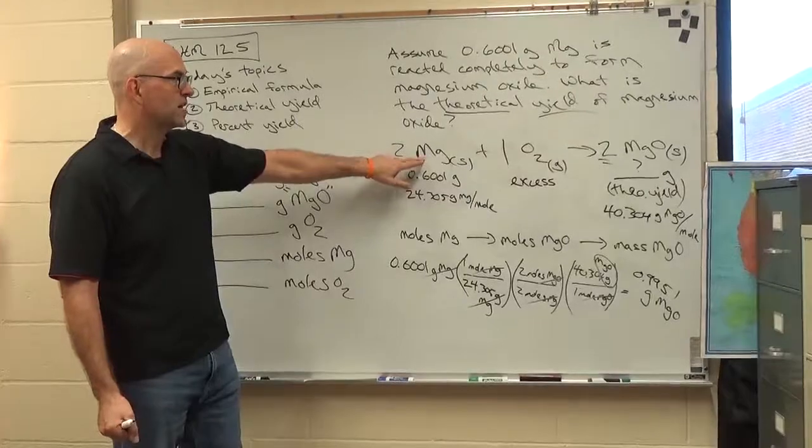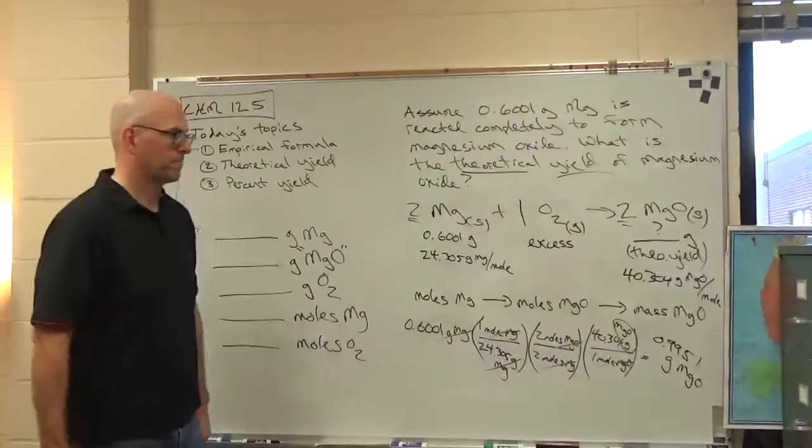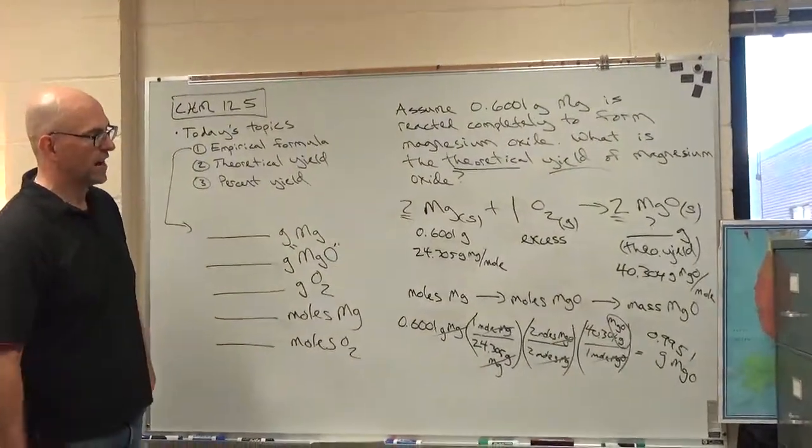You're taking an atom of oxygen, combining it with magnesium. So the molecule's getting bigger, so it makes sense that the mass is bigger. Okay. So that's the theoretical yield, 0.9951 grams.